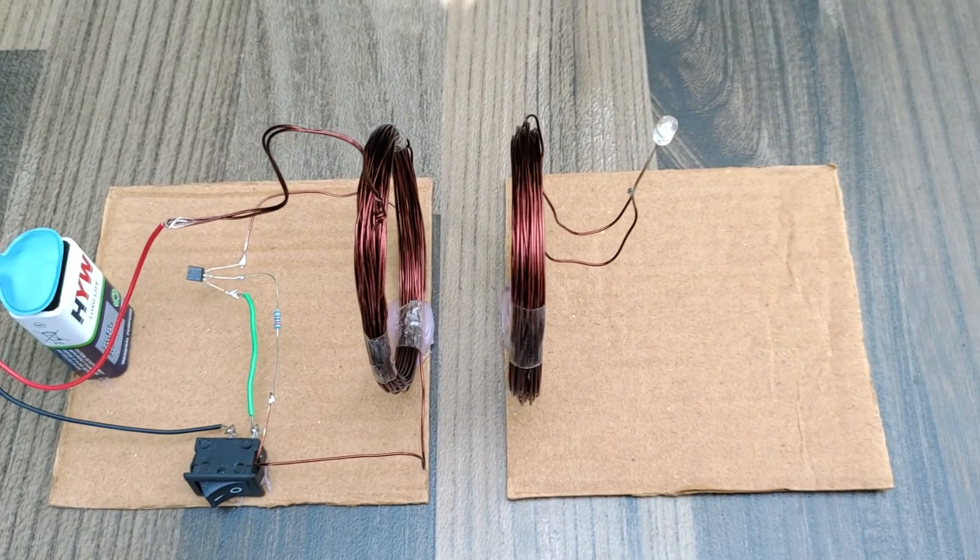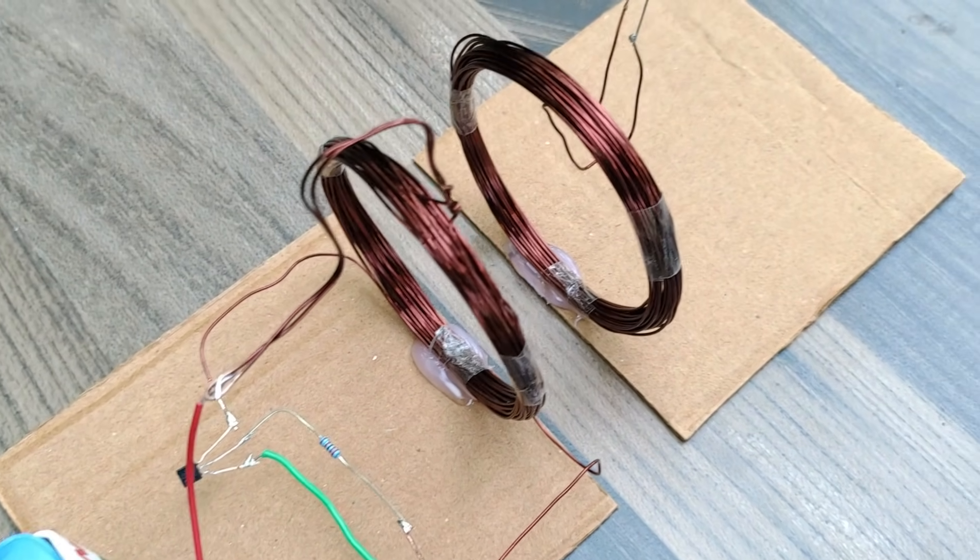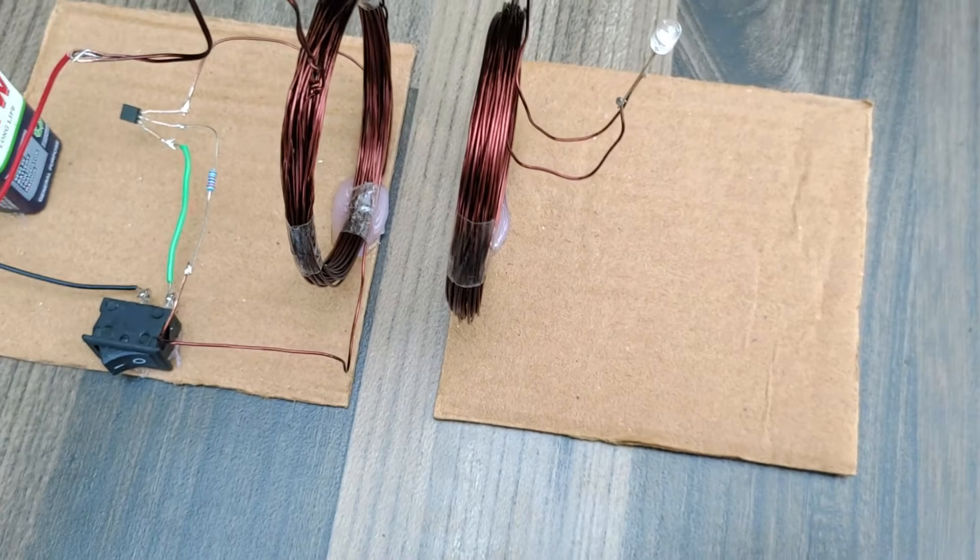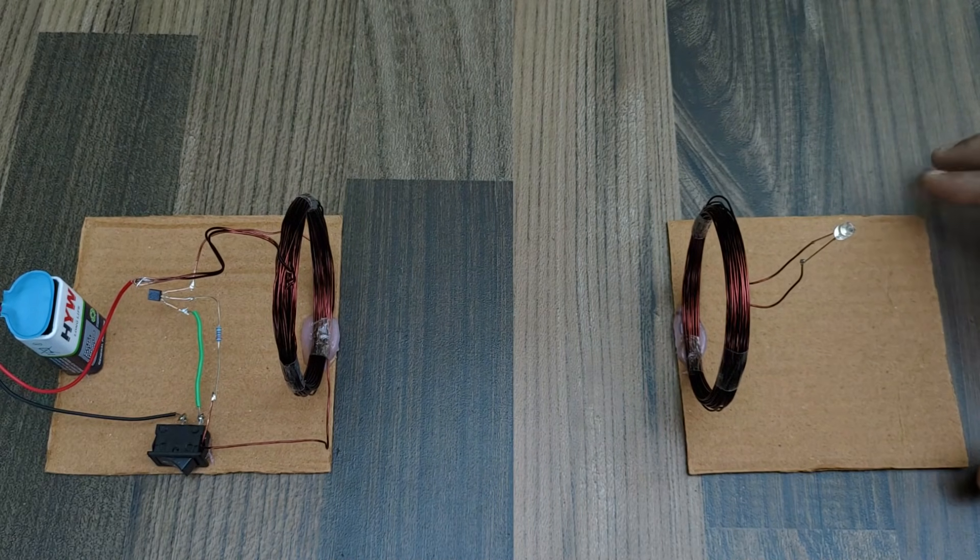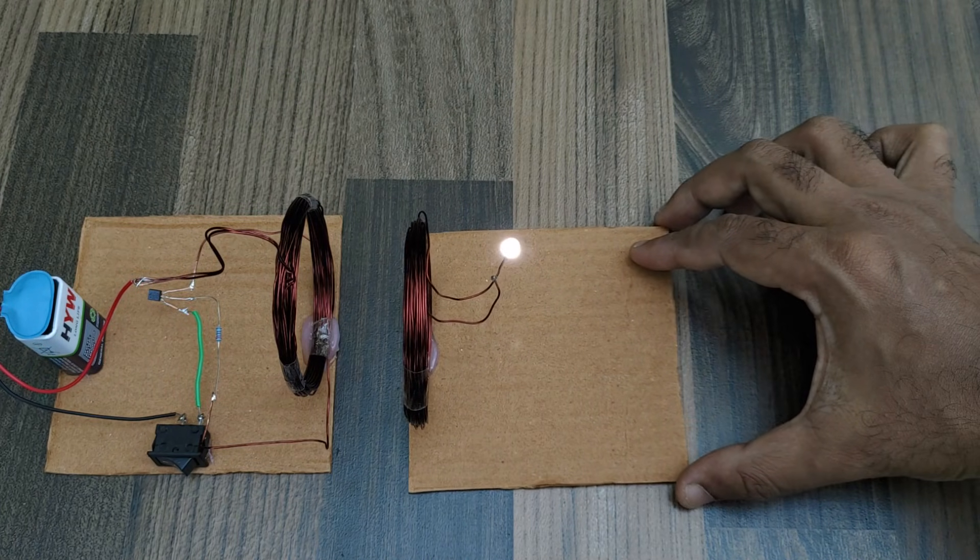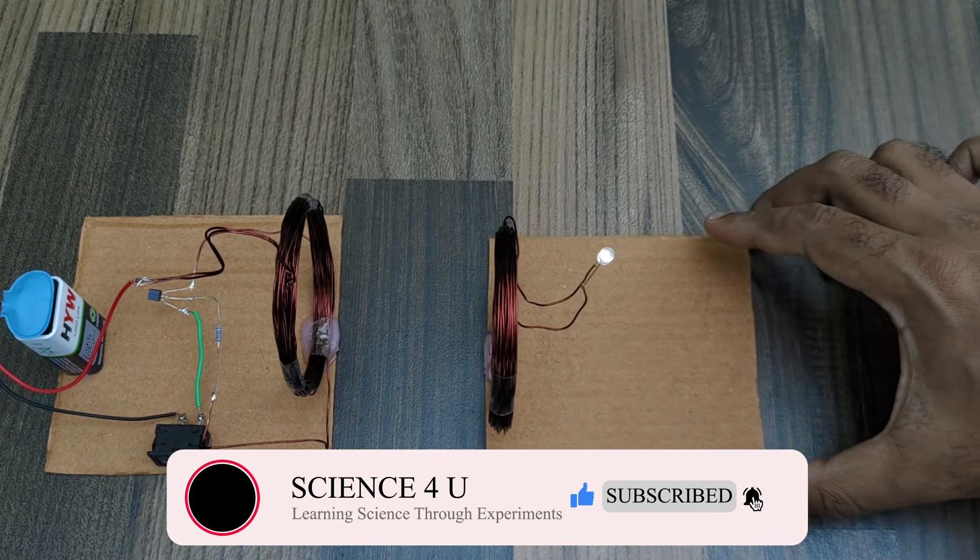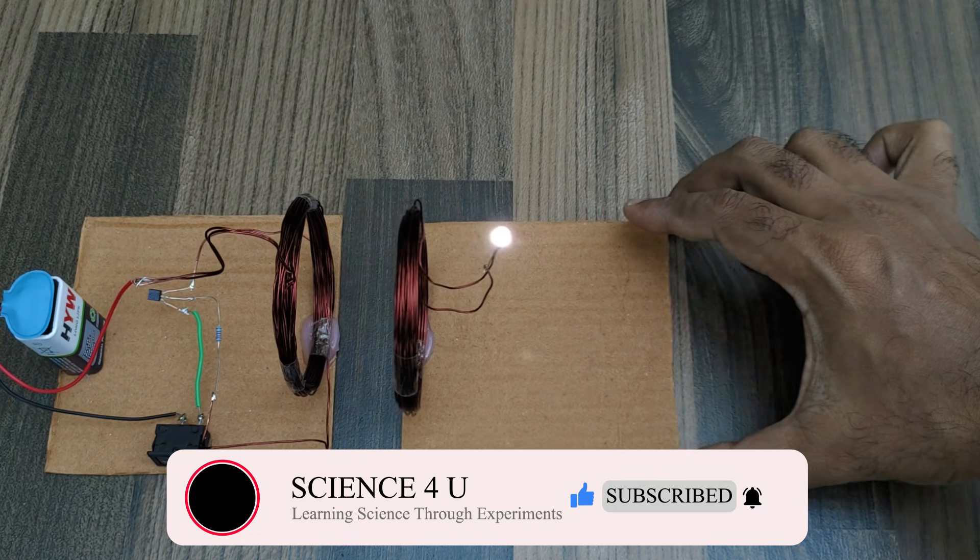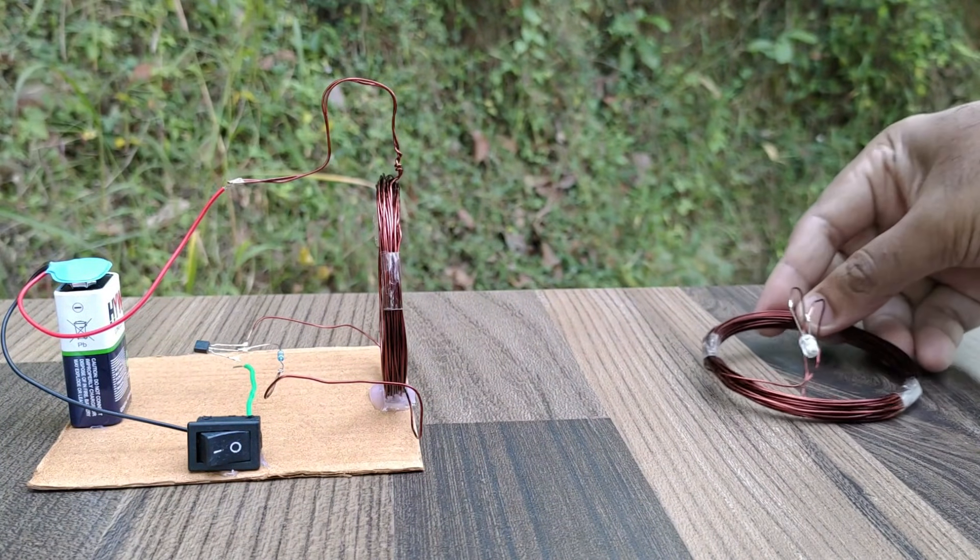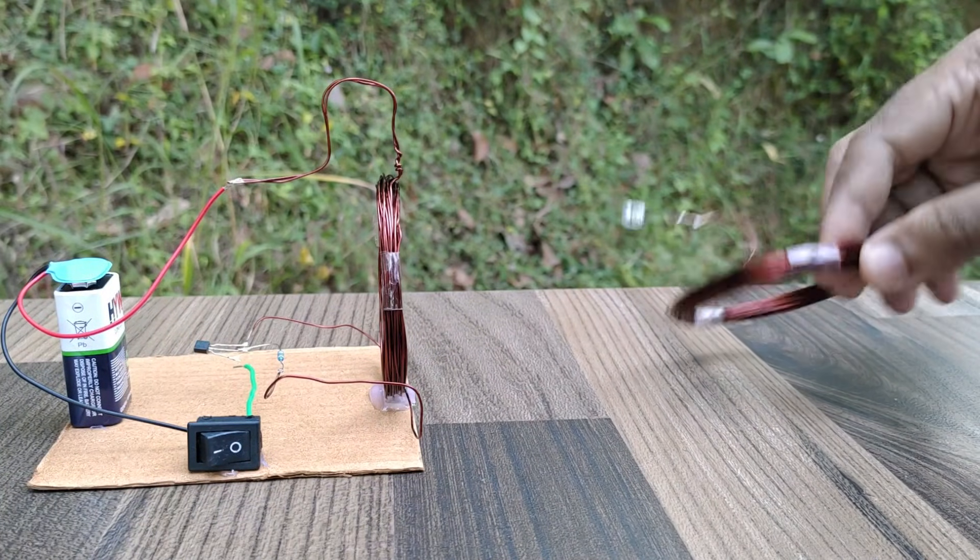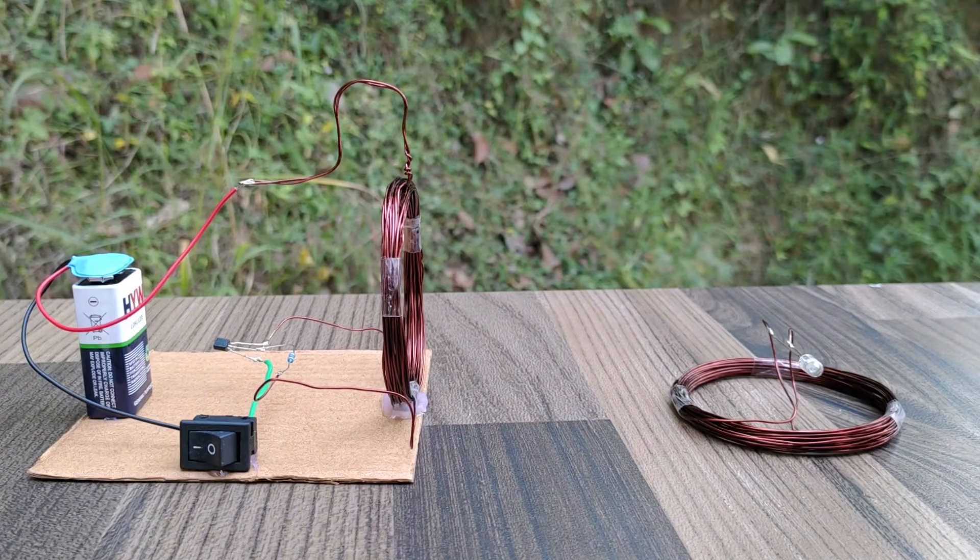The project is now completed. Let us now do the testing. The bulb in the receiver coil lights up when brought near the transmitter coil due to wireless power transmission. You can see that there is no separate power given to the receiver coil.